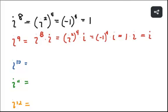For i¹⁰, we write it as (i²)⁵, replacing i² with −1: (−1)⁵. This time we have a negative raised to an odd power, so (−1)⁵ = −1. Therefore i¹⁰ = −1. So far we've seen three possible answers when raising *i* to powers: 1, i, and −1.